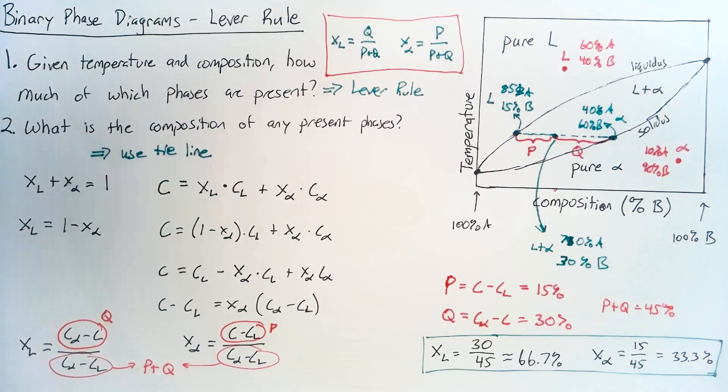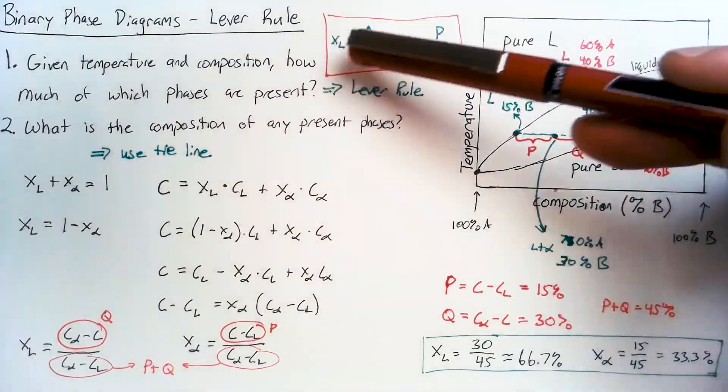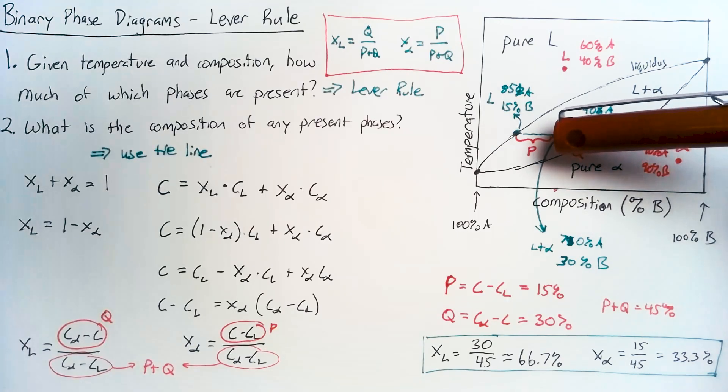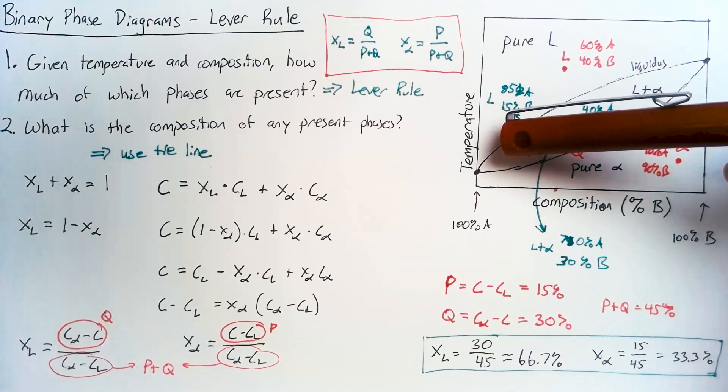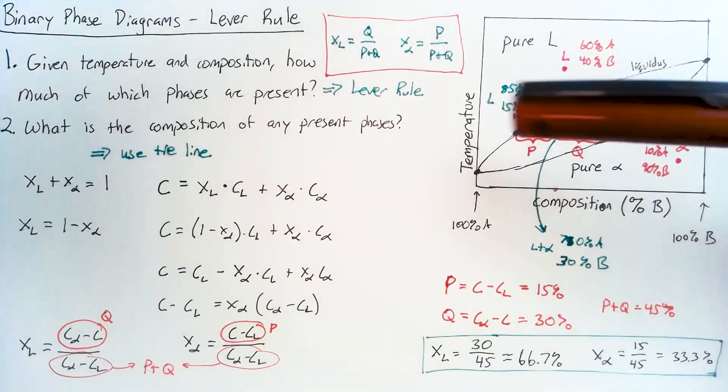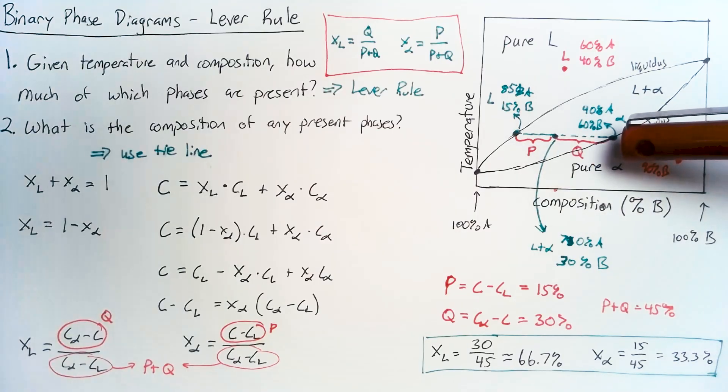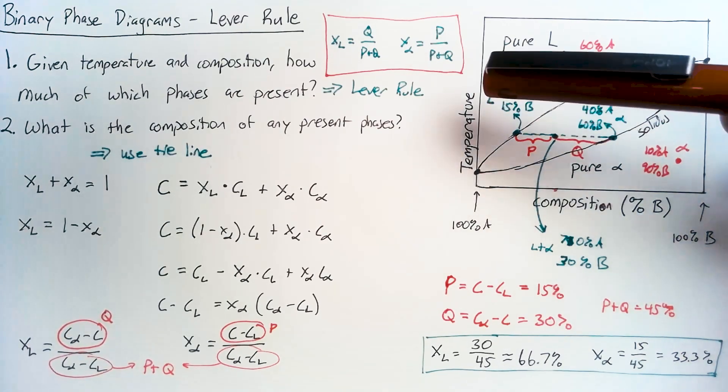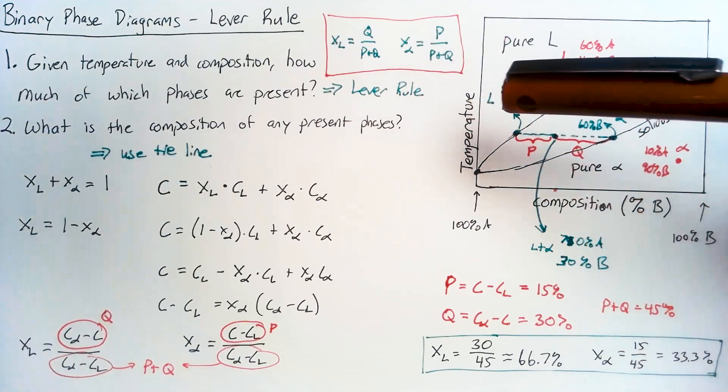And a check here, just in case you forget where exactly all the P's and Q's go, is that if we end up closer to the liquidus line, we should have more liquid. And if we end up closer to the alpha line, then we should have more alpha. If you just do that quick check, then you shouldn't mess up the final answer.